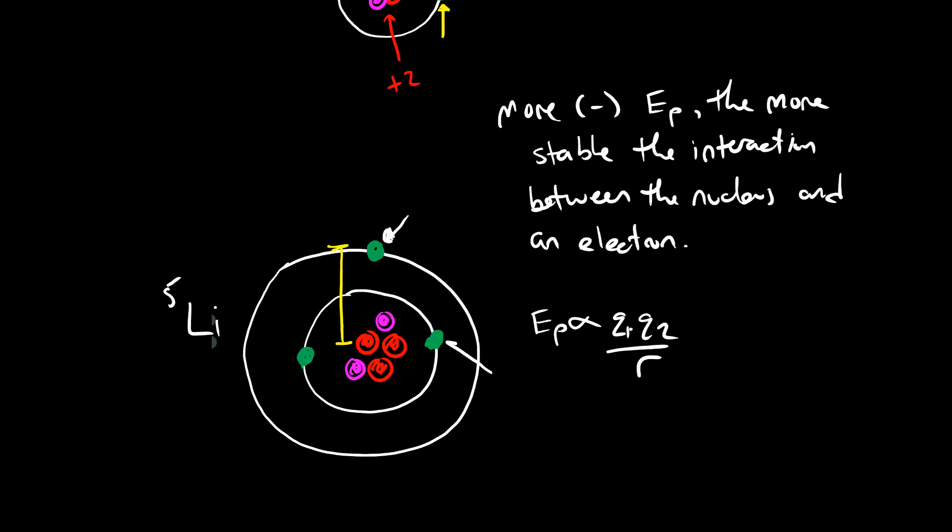To quickly summarize, the two big variables that influence the stability of an electron in an atom are: the distance the electron is from the nucleus — the radius, which is dictated by the orbit it occupies — and the total positive charge contributed by the nucleus.